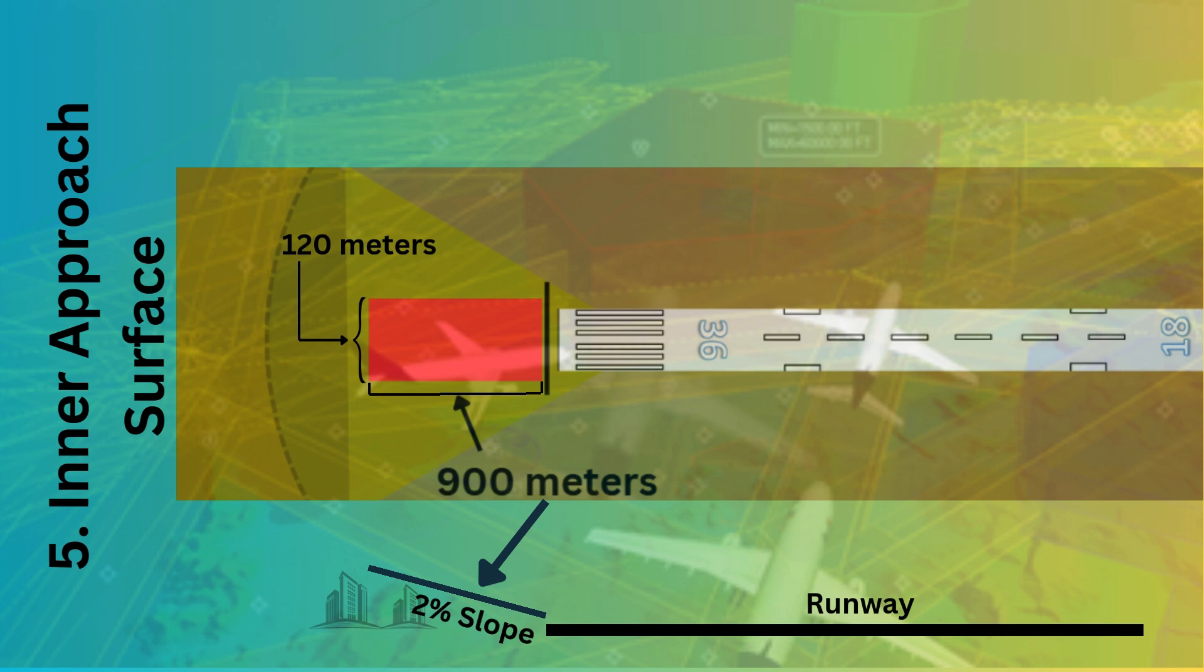So we can say that inner approach surface is actually part of the approach surface, since it is also having the slope of 2%, yet having a width of only 120 meters, unlike approach surface which has a width of 280 meters.